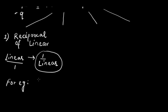For example, if we're given a linear function 3x plus 4, its reciprocal is 1 over 3x plus 4. We notice that is a fraction, or it's in p over q form. So this is called a rational function.